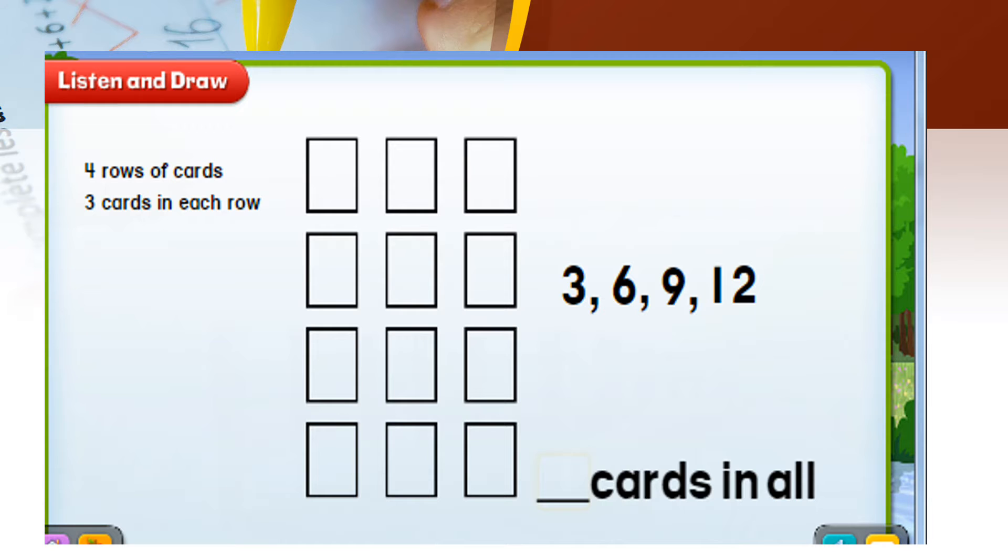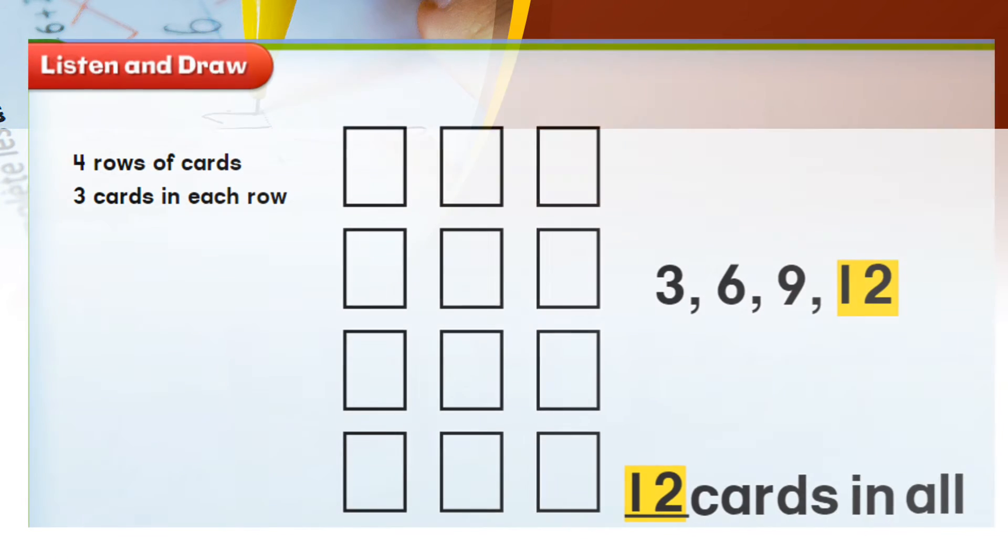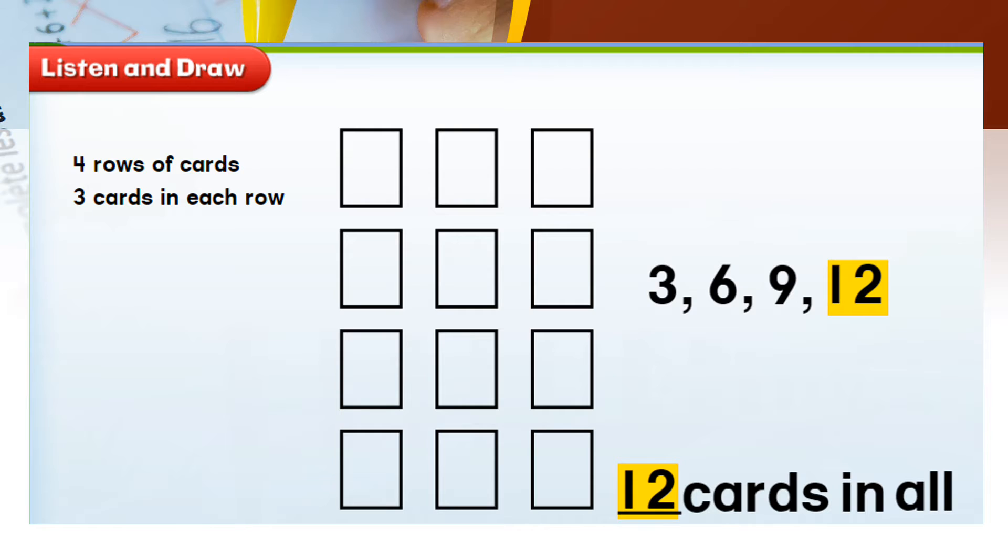Let's count: 3, 6, 9 and 12. Therefore, Clayton has 12 cards in all. Wasn't that easy children? So Clayton has 4 rows of cards, 3 cards in each row and the answer is 12 cards in all.